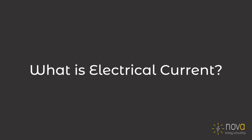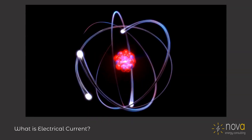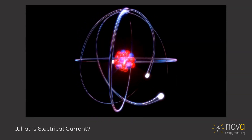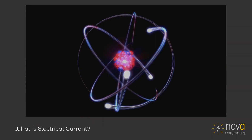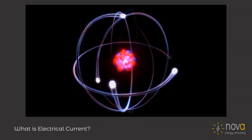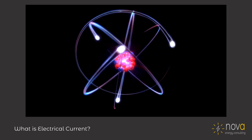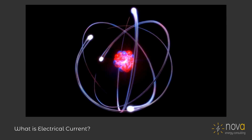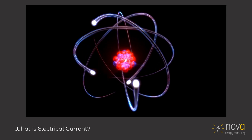What is electrical current? At a fundamental level, we can think of matter as made up of tiny particles called atoms. These atoms are made of even smaller particles. Around a core made of protons and neutrons, there is a cloud of negatively charged particles called electrons.